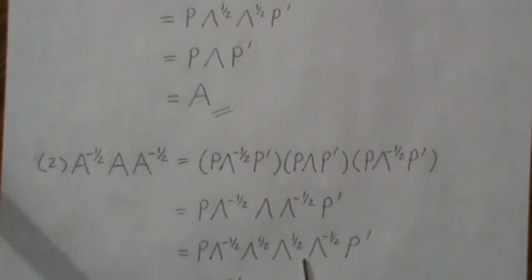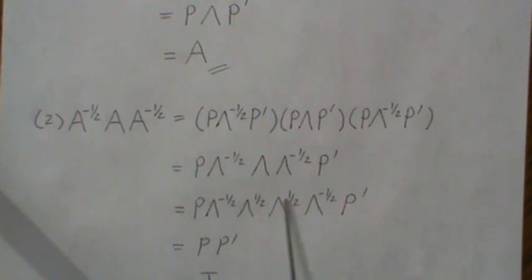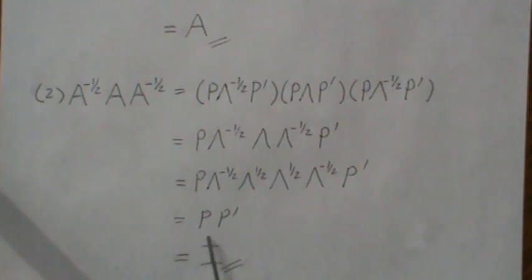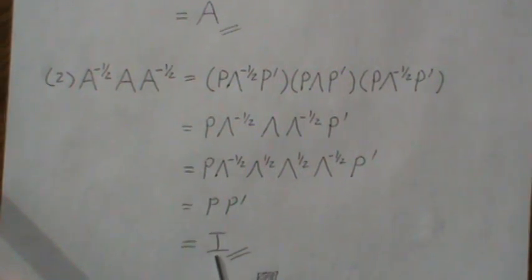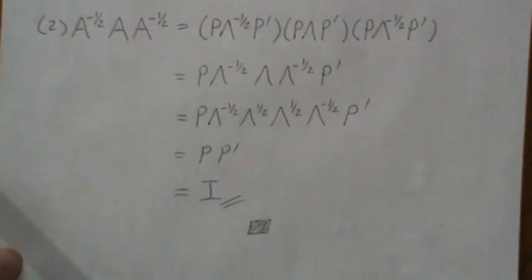This is the identity matrix. So we get P P prime — because the identity matrix goes away. But P P prime, because of the normalized eigenvectors, is the identity matrix. So this is the identity matrix, and we've shown what we set out to prove.